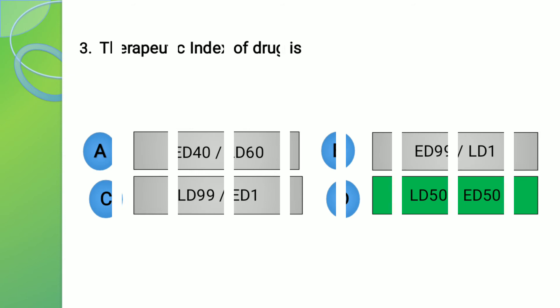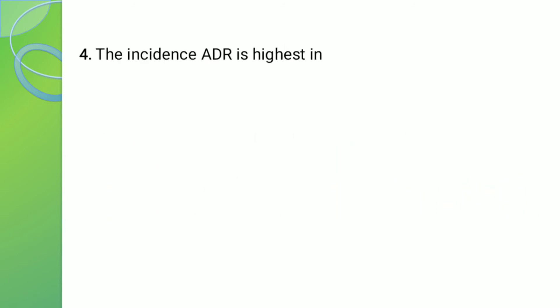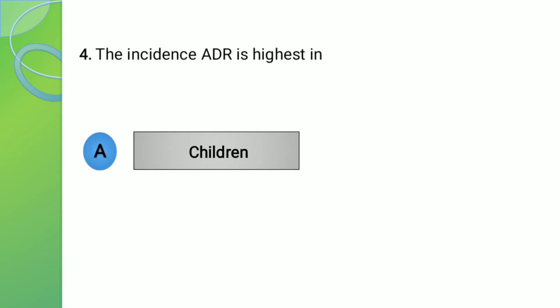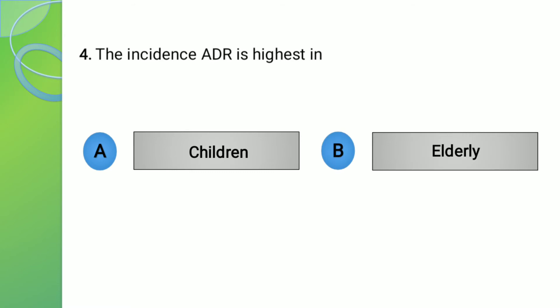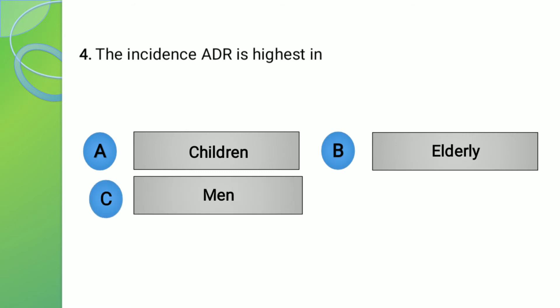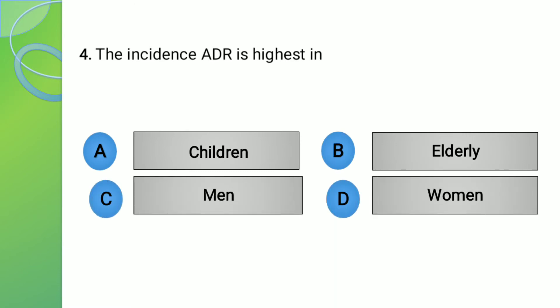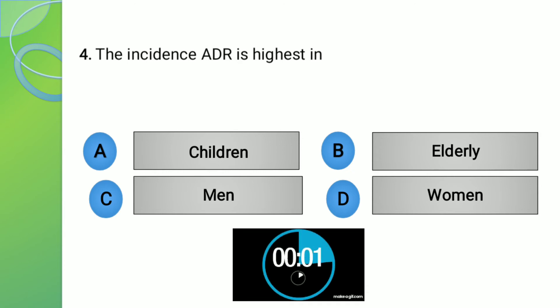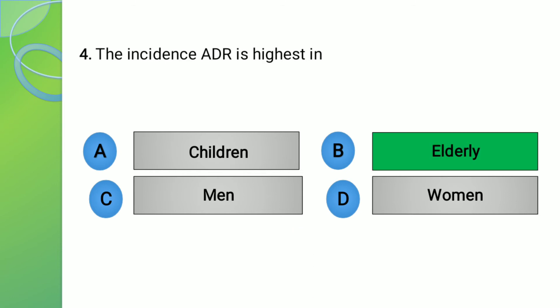Question number 4. The question is: the incidence of adverse drug reaction is highest in? The options are: A - Children, B - Elderly, C - Men, and D - Women. The correct answer of this question is option number B, that is Elderly.